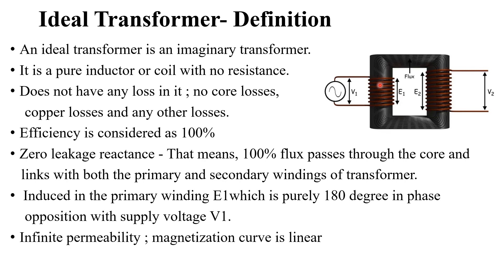I discussed with you about the construction of transformer in detail. This is the primary winding and this will be the secondary winding. Normally, we apply supply voltage to the primary side of the transformer and the load is connected to the secondary side. Here, secondary is kept open. So this is the general idea about the ideal transformer.